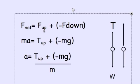Force net equals force up plus negative force down. Substituting for force net, mass times acceleration. Tension up is the cable plus a negative mg down is the weight.